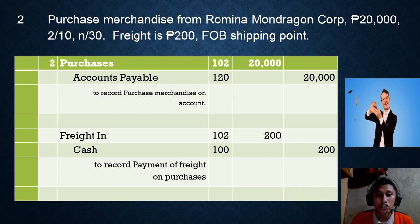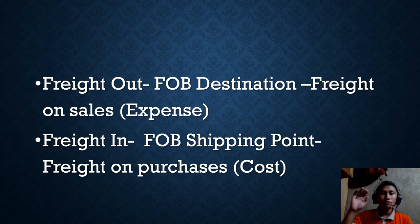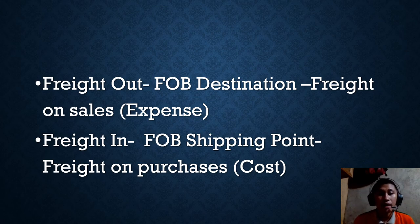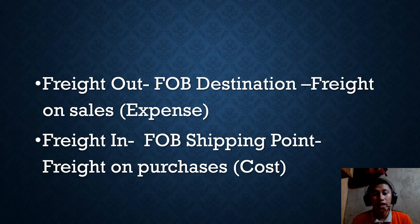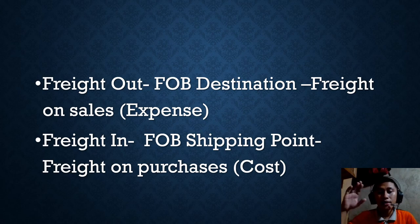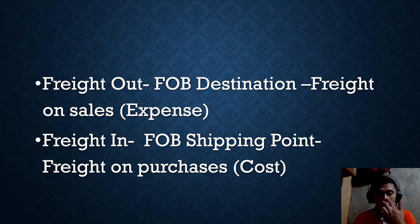There are two kinds of freight: freight in and freight out. Freight in (FOB shipping point) means the buyer pays the transportation cost when the merchandise is delivered from seller to buyer. Freight out (FOB destination) means the seller pays the transportation cost to deliver to the buyer.